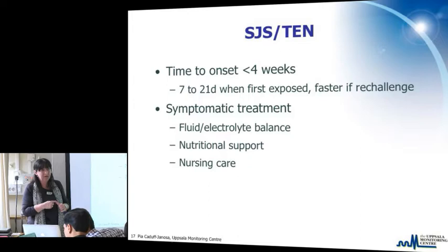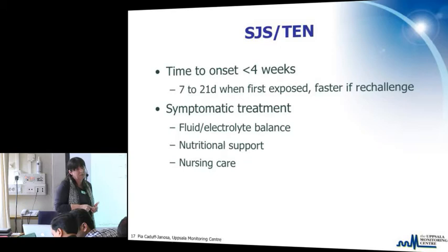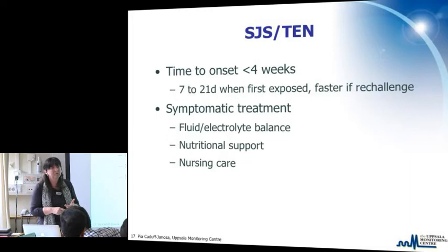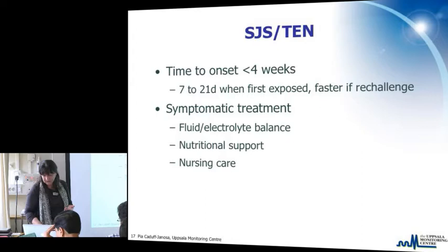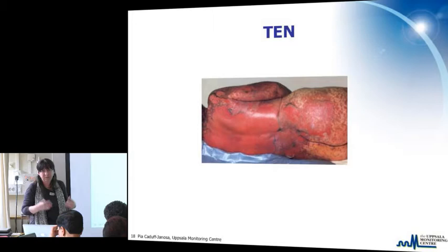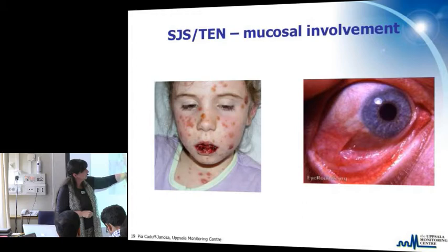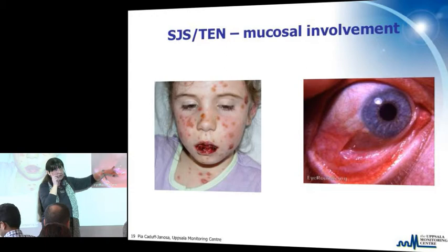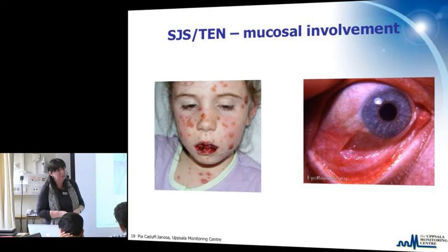There is not much you can do besides withdrawing the drug and providing intensive nursing care. These patients must be treated like severe burns — they need fluid and electrolyte balance maintenance, nutritional support, and are in a highly catabolic state requiring high-caloric support. This is TEN — not nice to look at. Like a second-degree burn, it is extremely painful. This is a child with Stevens-Johnson syndrome — the mucosae are affected, the child cannot swallow, and the eye shows scarring. Patients who survive may require surgery.